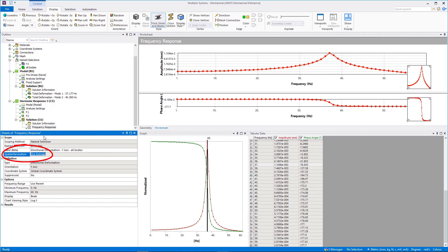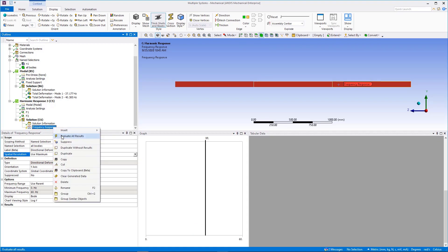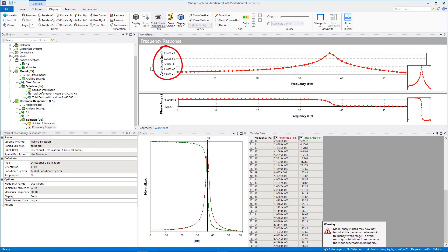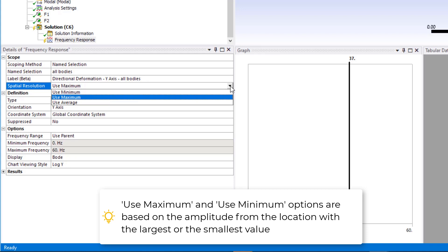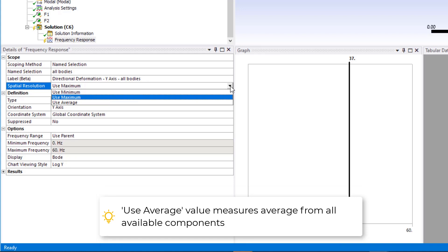With spatial resolution set to use average, this can sometimes give a low number whereas use maximum might be more representative. It is always best to review both average and maximum. The use minimum and use maximum settings of the spatial resolution option are based on the amplitude and thus are reported from the location with either the largest or the smallest value. The use average setting calculates the average from all the available components.